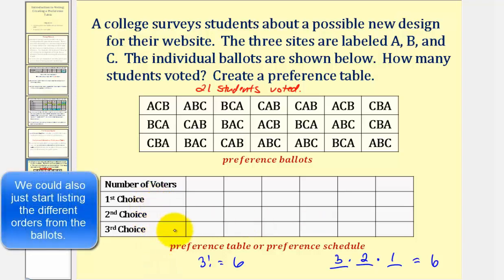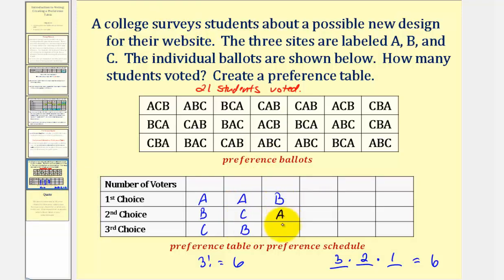Let's begin by listing the six possible orders. So if we start with A, B, C, let's now list A, C, B. Now let's start with B, so we could have B, A, C, and then B, C, A. And now we'll start with C — we could have C, A, B, and then C, B, A.